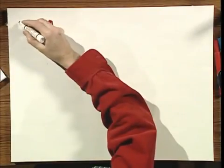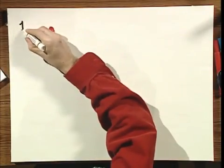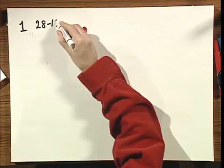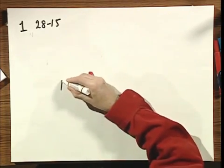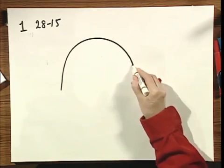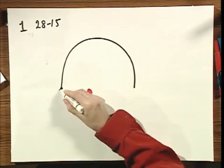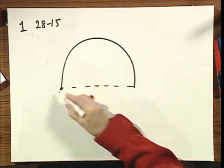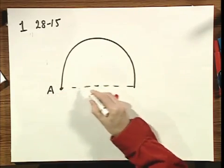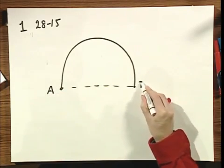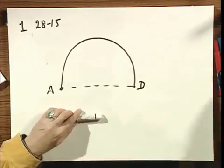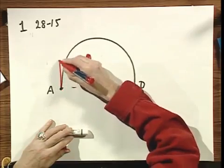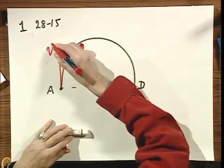Let's start with problem number one, which is 28-15. An electron is going around in half a circle. This is the center of the circle. I call this point A and I call this point D to avoid confusion with B. And the electron right here has a velocity V.